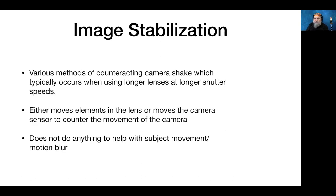Image stabilization counteracts camera shake you typically have when using longer lenses at slow shutter speeds. It can either move lens elements to match camera movement, or move the sensor — which is called in-body stabilization. In-body works well for shorter lenses; on longer lenses it's better to have IS in the lens. It doesn't help with subject movement or motion blur.